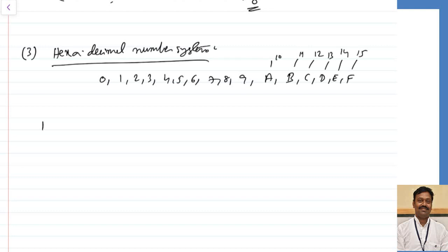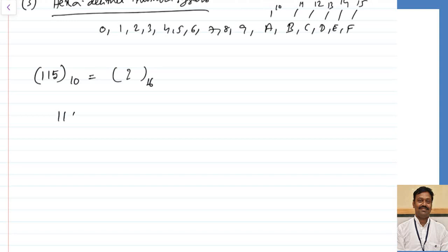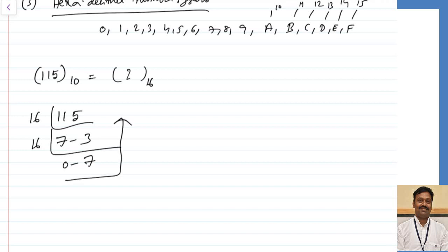Let us convert 115 in base 10 to hexadecimal. Divide 115 by 16: gives 7 with remainder 3. Divide 7 by 16: gives 0 with remainder 7. Reading upward gives 73 in base 16. For any fractional part, multiply by 16, as we have already seen.